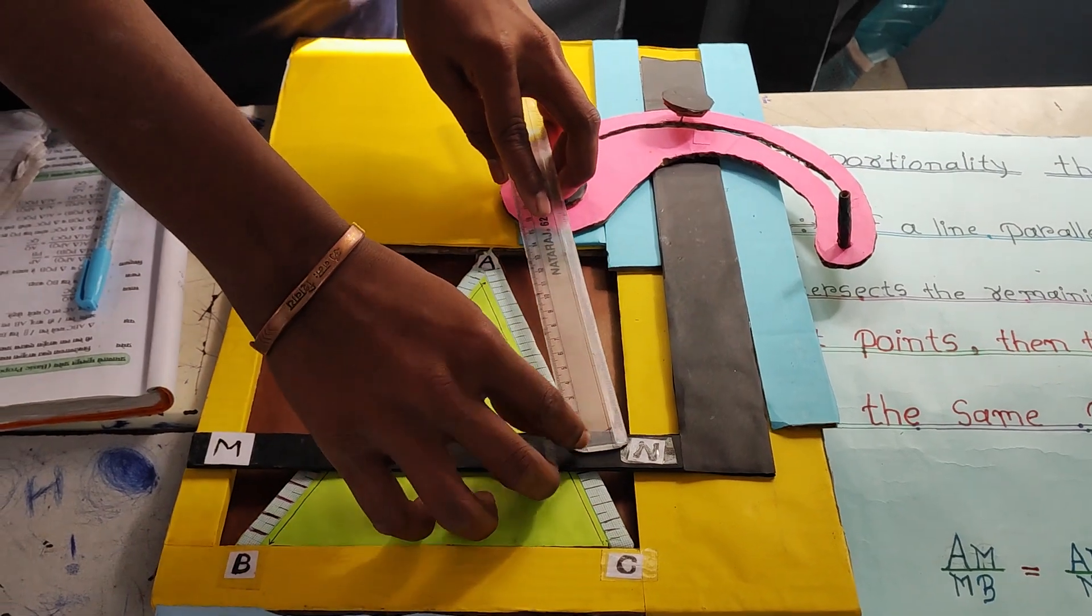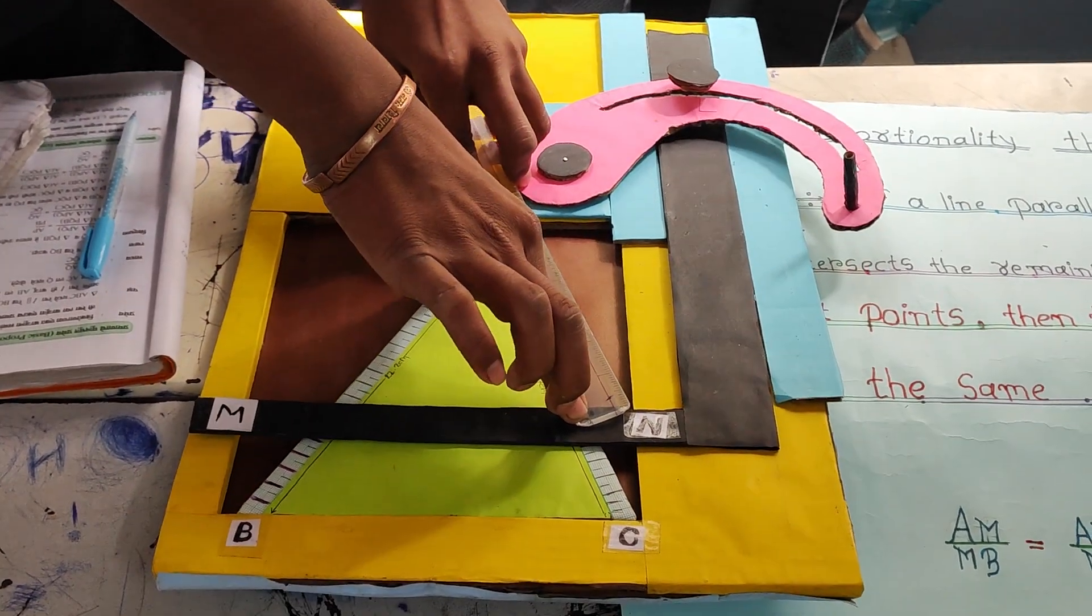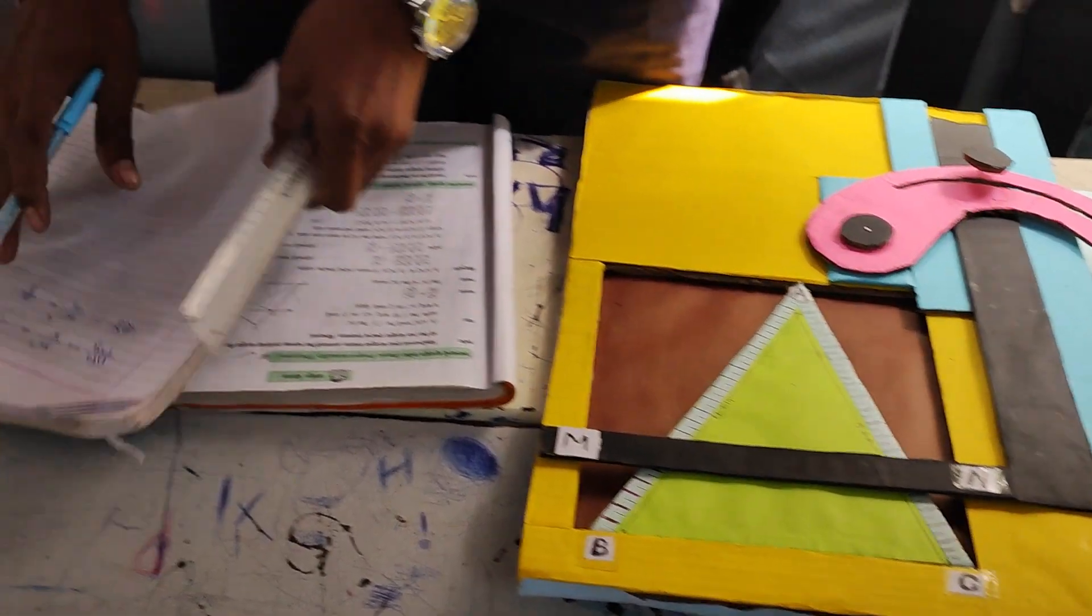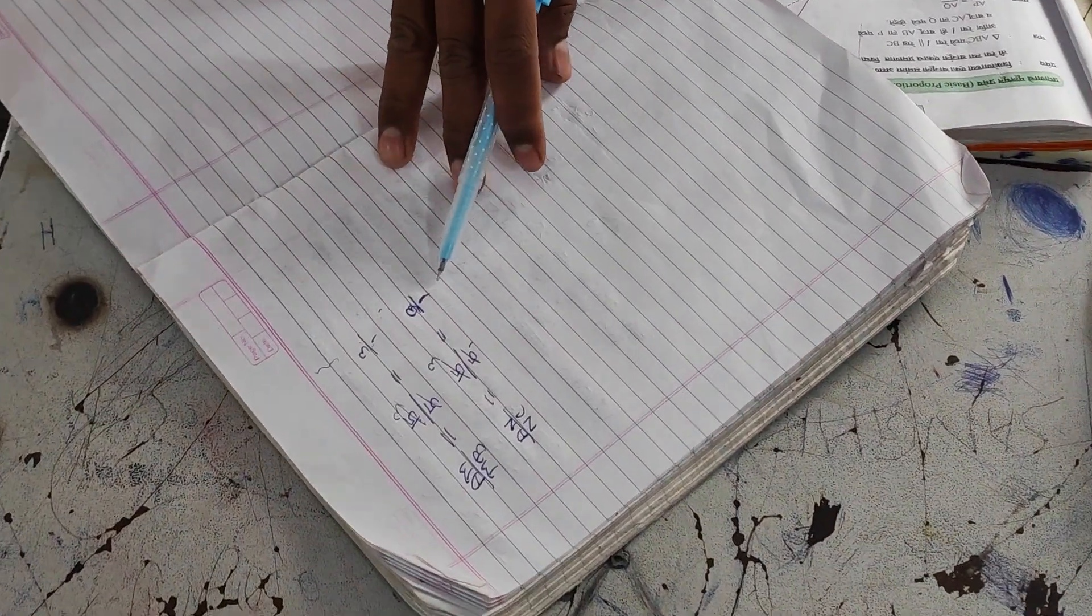AN is 0.15. Using these measurements, we get the ratio 3 upon 1 and 3 upon 1.